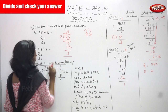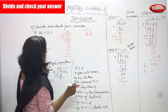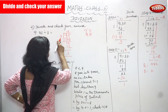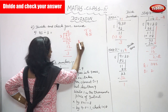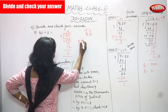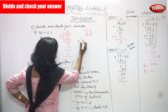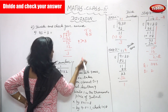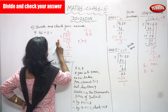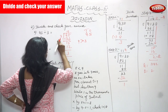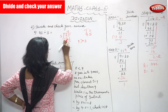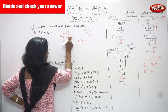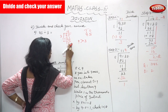First I will take only the tens digit. The tens digit is 4. So 4 is divided by 3. Since 4 is greater than 3, 3 goes one time. So 3 ones are 3. Then 4 minus 3 gives 1.